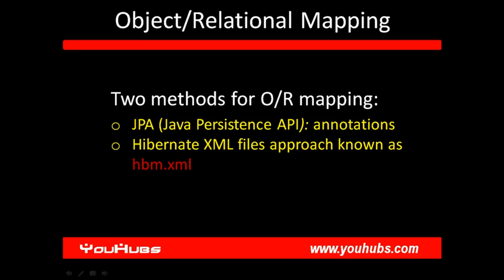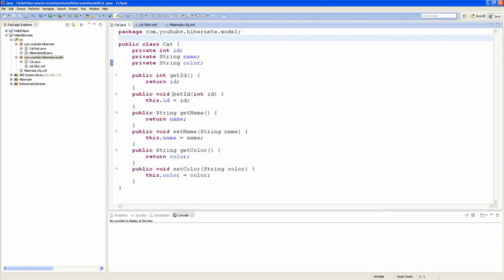Hello! Last time I showed you how to use Hibernate XML configure file to do the ORM mapping. This time we are going to use JPA annotations to do the same work. Let's start.